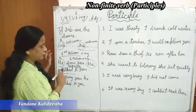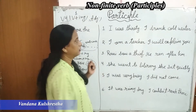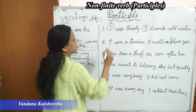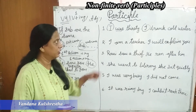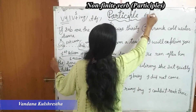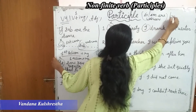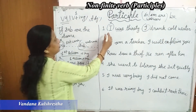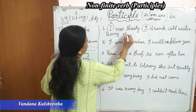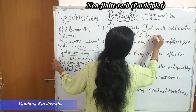Next example: 'I was thirsty / I drank cold water.' Subject is the same — we remove the second 'I'. Now 'was' is a be-form verb. Be-forms are: is, am, are, was, were. So we use being. 'Was' becomes 'being thirsty.' Result: 'Being thirsty, I drank cold water.'